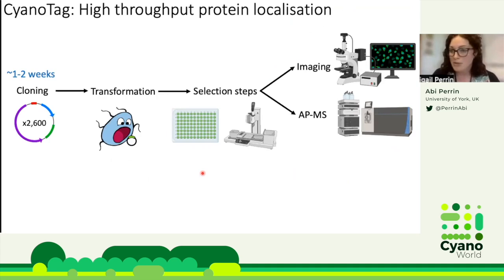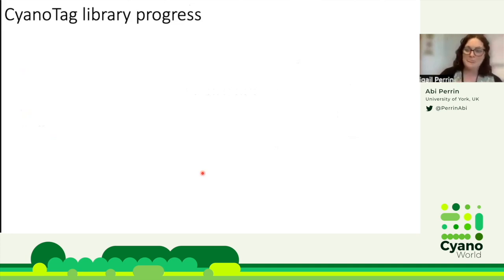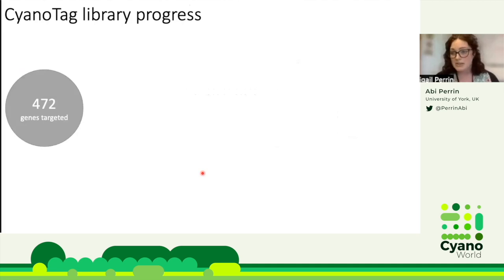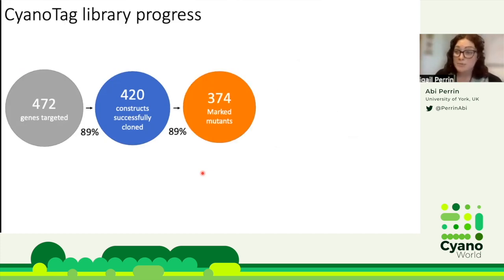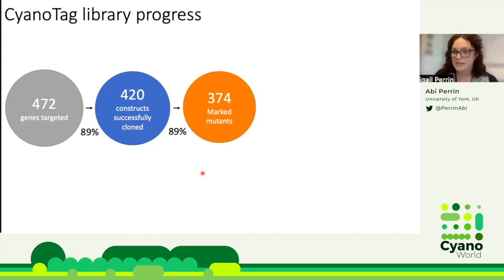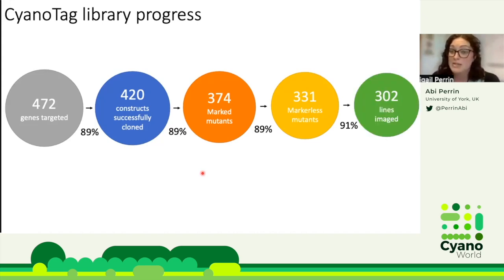Having optimized these steps, if all goes well it takes a couple of weeks to clone the plasmid of interest, just a day to transform the bacteria, and a month or two to select them — meaning we can generate hundreds of mutants in parallel within just a few months. So far we have targeted about 500 proteins using this approach, generating about 90 percent of the intended plasmids. We have a good conversion rate from plasmids into marked mutants, which surprised me given the potential for deleterious effects of N-terminally tagging essential proteins. We also have a high rate of conversion between marked and markless mutants, and expect this to improve further with recent protocol optimizations.